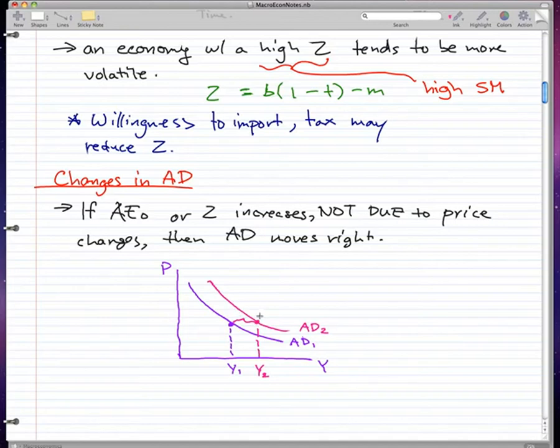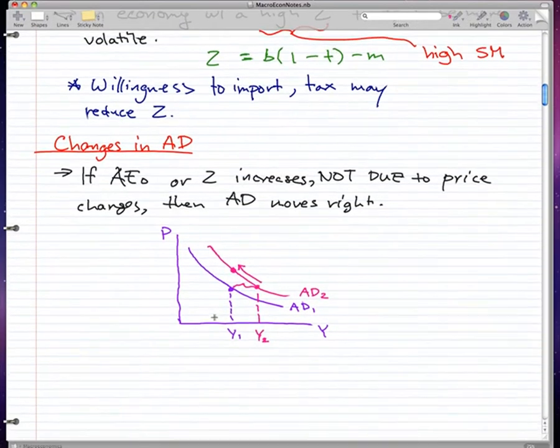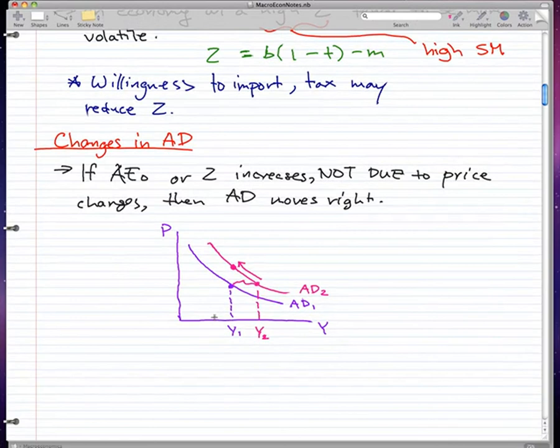But over the short run, what will probably happen is the price will begin to be reflected. The economy will begin to reflect what actually happened, that the aggregate demand moved right. So in the short run, the price will probably move up. I'll probably talk more about this in subsequent videos, but that's all I want you to know for this video.